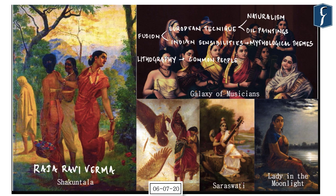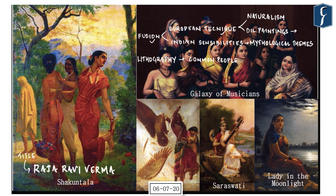Raja Ravi Varma was born into an aristocratic family belonging to the princely state of Travancore, which is now Kerala. The title 'Raja' does not denote a king — a common misconception — but was conferred on him by the Viceroy of India. His art is a fusion of both European technique and Indian sensibilities.